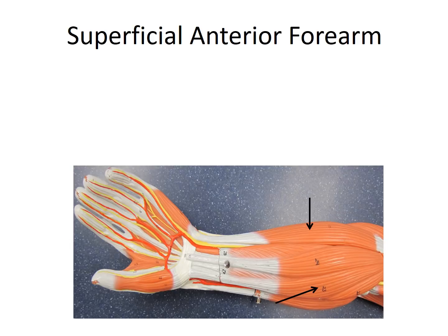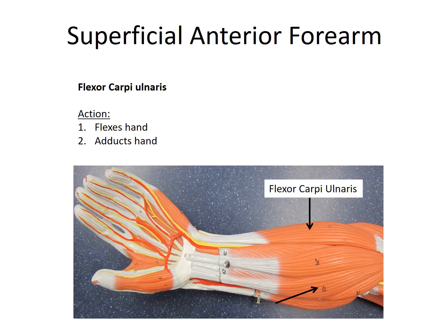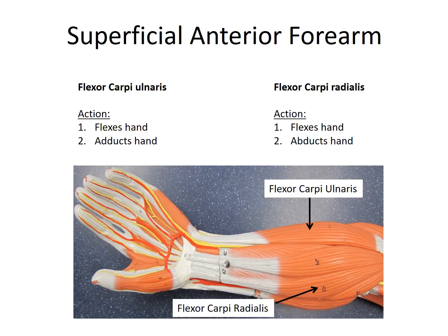Still looking at the superficial anterior forearm, we have the flexor carpi ulnaris — a flexor that flexes the carpals/wrist. 'Ulnaris' means it's superficial to the ulna, so it's on the medial side of the forearm. Its action is to flex and abduct the hand. We also have the flexor carpi radialis — also a wrist flexor, but 'radialis' means it's on the lateral side of the forearm. Its action is to flex and abduct the hand as well.